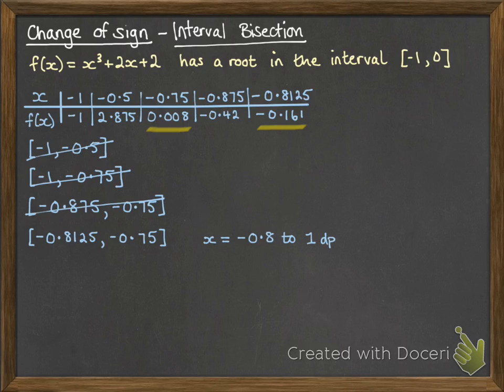At this point here we would be able to say that x = -0.8 to one decimal place. And we can make statements about the answers like we did with our previous one.